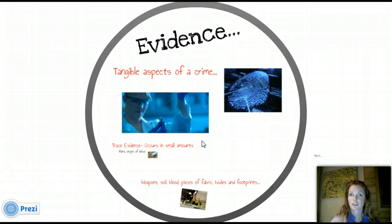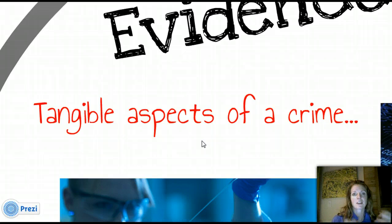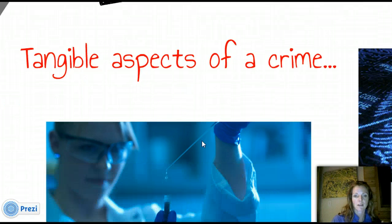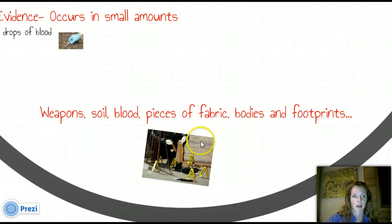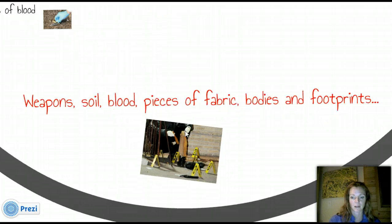Let's talk a little bit about evidence, because you'll see this in your first lesson. Evidence is huge — it's what we build off of to figure out the answers to our questions. Evidence is tangible aspects of a crime. Tangible means you can touch it, see it, feel it, sometimes smell or hear it. There are so many different types: weapons, soil, blood, pieces of fabric, bodies, footprints — and many more besides that.